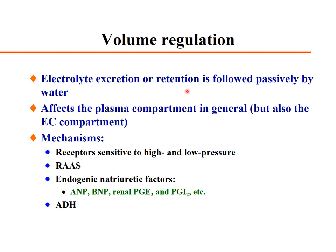Volume regulation affects both the plasma compartment and extracellular compartment. Mechanisms include receptors sensitive to high and low pressure blood volume, the renin-angiotensin-aldosterone system, and endogenic natriuretic factors such as atrial natriuretic factor, BNP, renal PGE2, or PGI2, along with ADH.